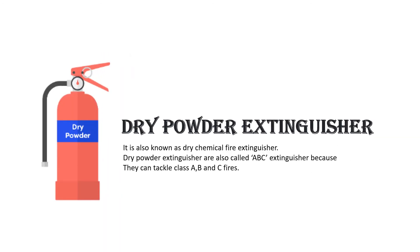Dry powder type fire extinguisher, also known as dry chemical fire extinguisher. Dry powder extinguishers are also called a BC extinguisher because they can tackle Class A, B, and C fires.